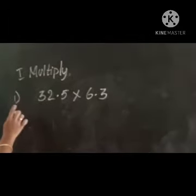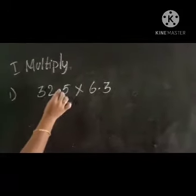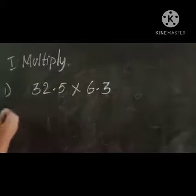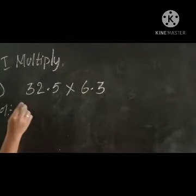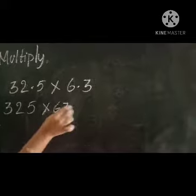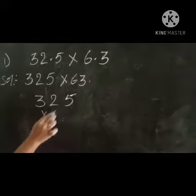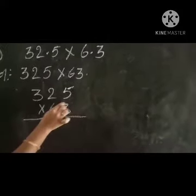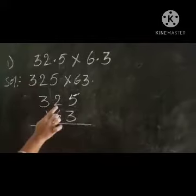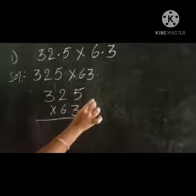Another example: 3.25 into 6.3. Remove decimal points and multiply 325 into 63. Multiply 325 by 3 first: 3 fives are 15 — write 5, carry 1. 3 twos are 6, plus 1 is 7. 3 threes are 9. First partial product is 975.